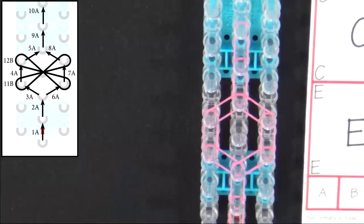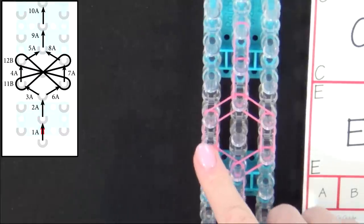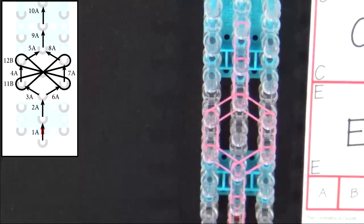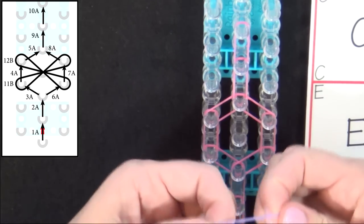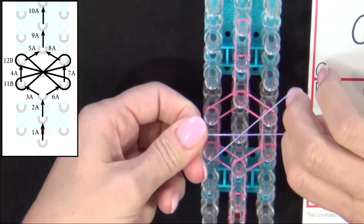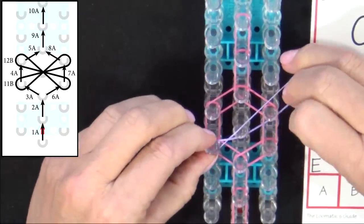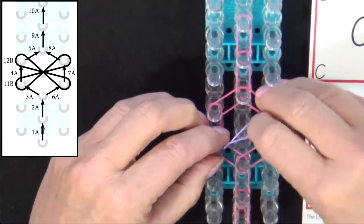Now we'll place band 11B. It will start from this pin and end on this one. You'll get your B band, twist it into a figure 8, and place it across the hexagon.